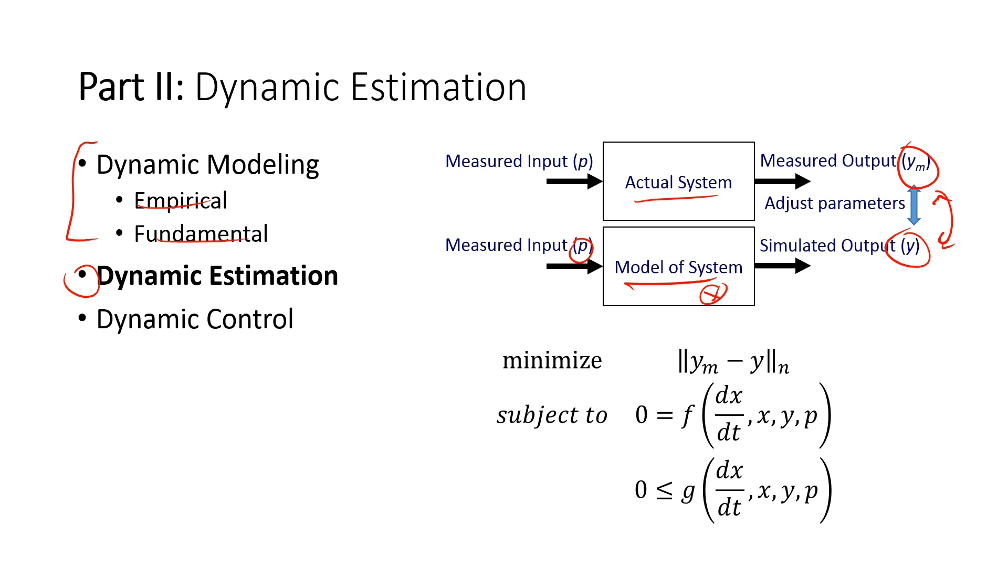A general form that we're going to use is to minimize an objective function. In this case, this is our measurement right here, and then our model prediction on the right. This is a norm. This could either be a one norm, so that would be y measure minus model absolute value.